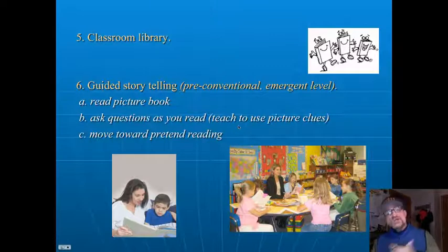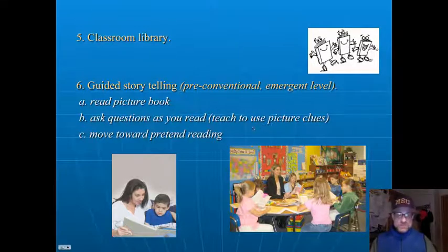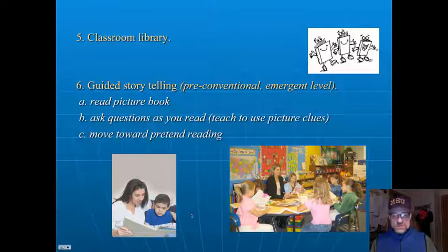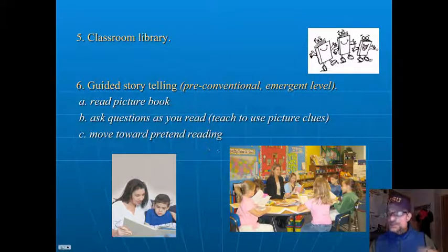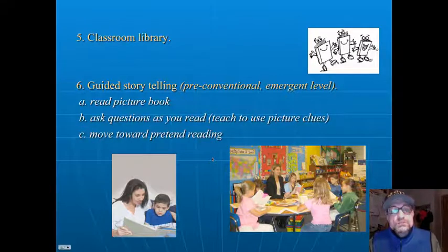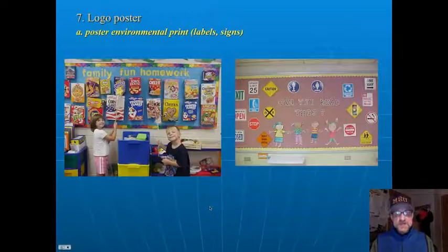Guided storytelling is where you read a book together — this is at the pre-conventional and emergent literacy levels. Parents do this a lot: they read a book, stop and ask questions like 'Where's the bear?' or 'What do you think will happen next?' This helps movement toward what we call pretend reading, where children can tell you the story using just picture cues. That's an important emergent literate behavior. Remember, reading is learning to use print text to create meaning. In the early stages, children may use more picture cues than letter cues, but they are still creating meaning with text.